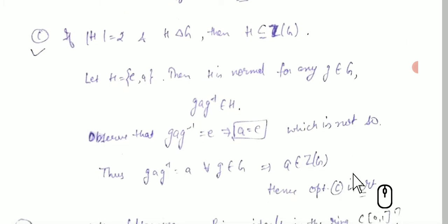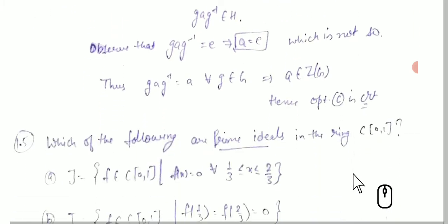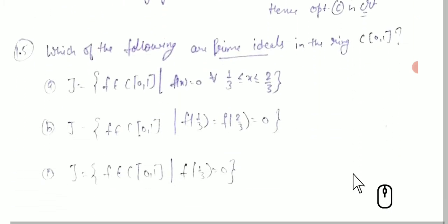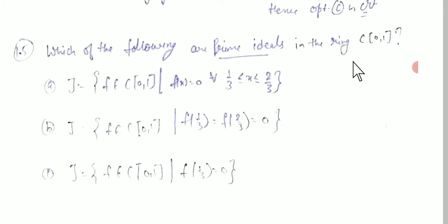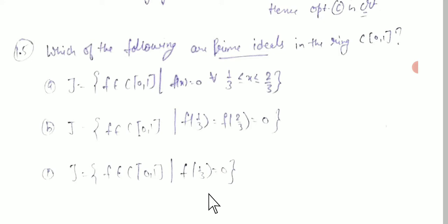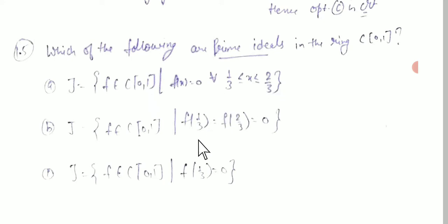For the fifth question, we have to identify which ideal is prime and which is not. The basic trick is to consider the interval and the root ideal, and evaluate fractions like 1/3 and 2/3 accordingly.